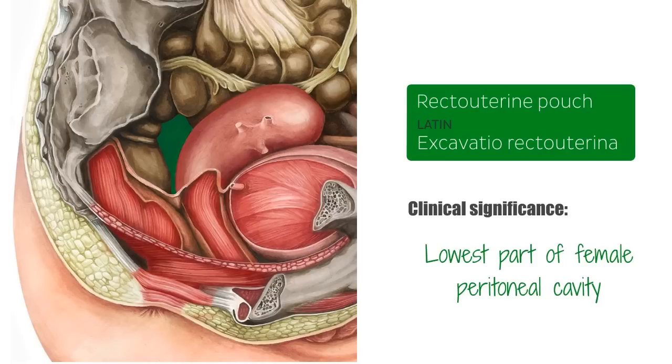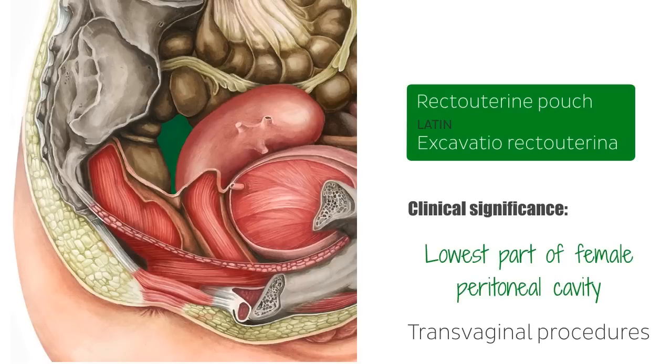Additionally, due to its location, the recto-uterine pouch is accessible to certain transvaginal procedures such as needle aspiration and endovaginal ultrasound.